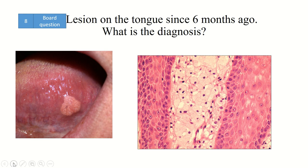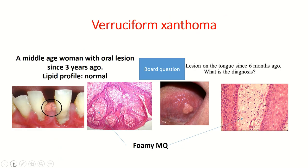Lesions on the tongue since six months ago — this was a board question. What do you see here? There is a solitary verrucous plaque on the tongue, and histopathology shows foamy macrophages, indicative of verruciform xanthoma. Here you see two board questions from the past on verruciform xanthoma.